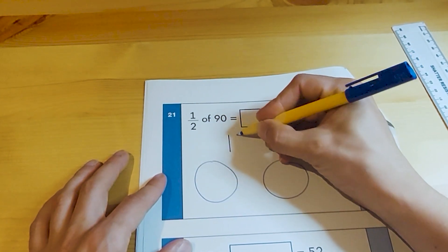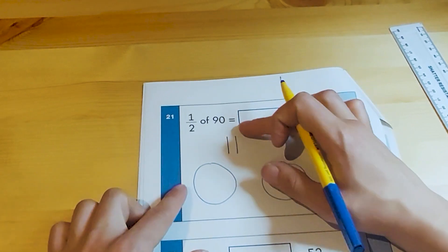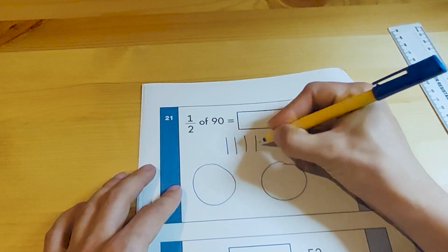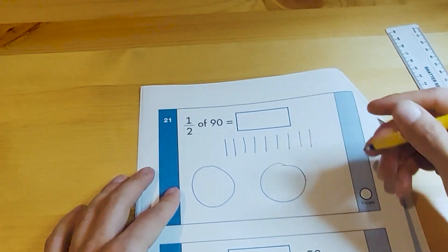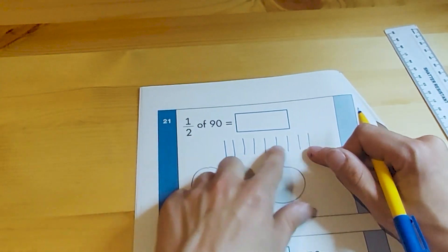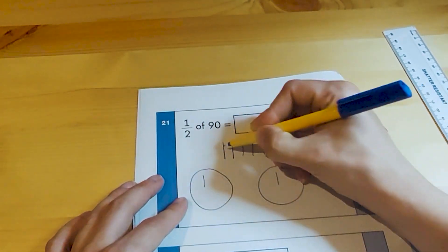When I've taught in Year 2 before, we represent a 10 like this as a line because it's a representation of the Dene's blocks. One line like this is a 10. So that's 10, 20, 30, 40, 50, 60, 70, 80, 90.